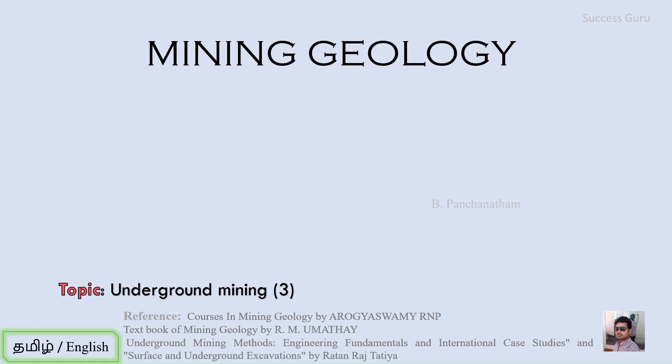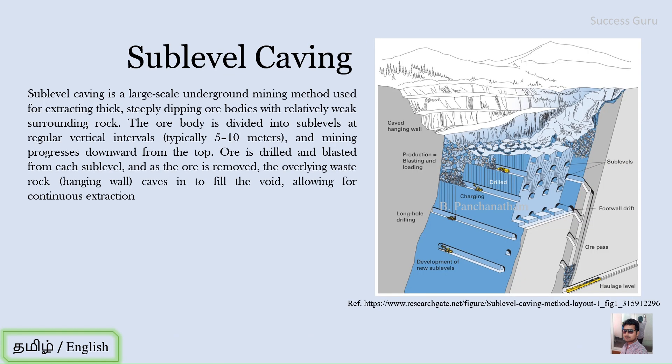In today's video, we will cover three headings: inclined ore body with incompetent country rock, massive ore body, and irregular ore body. The first topic is the sub-level caving method, which is preferred for an inclined ore body with incompetent country rock.